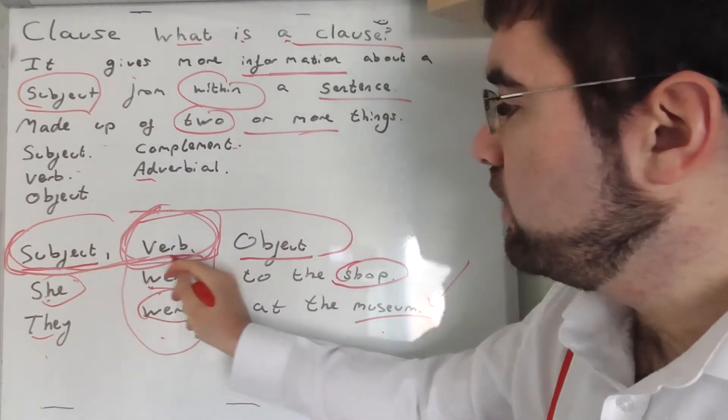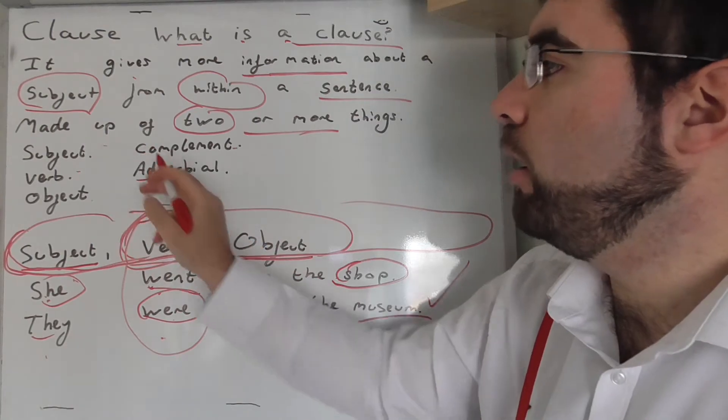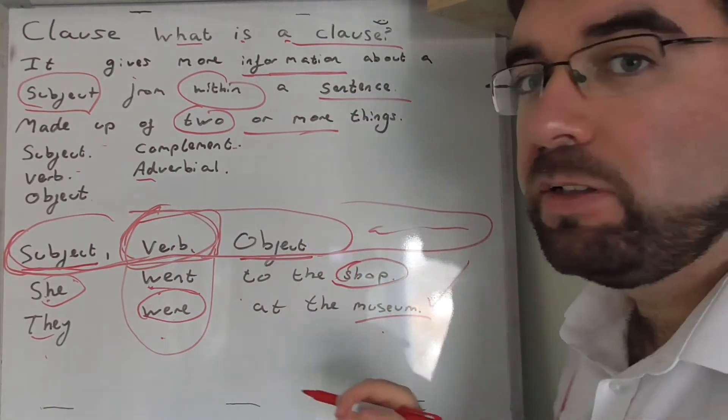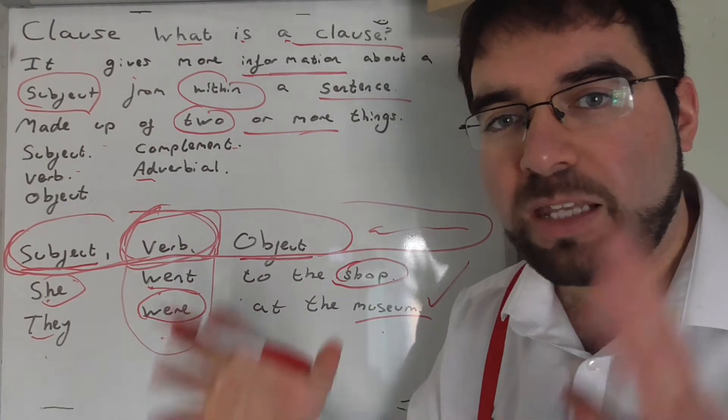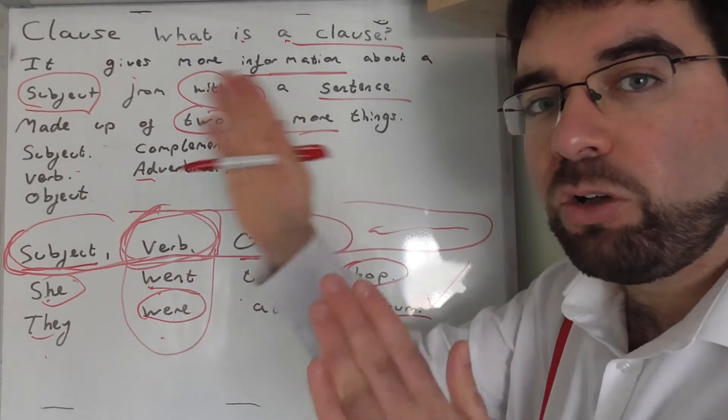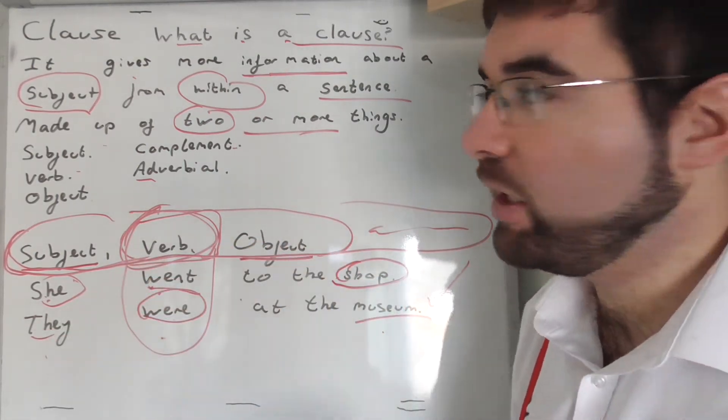And as we add more things - subject, verb, object, complement, adverb - the sentence gets bigger and bigger and bigger. We add more things together. And then you want to add another clause on top of that, or together, string them together. But that's something else.